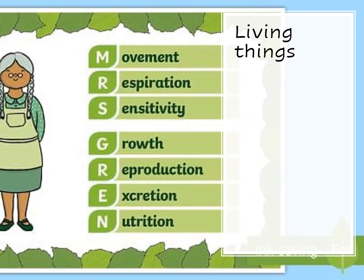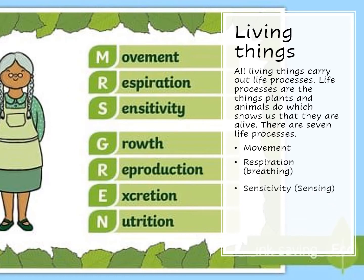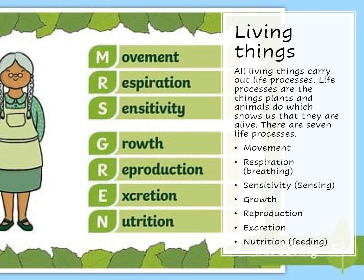All living things carry out life processes. Life processes are the things plants and animals do, which show us that they are alive. There are seven life processes: movement, respiration or breathing, sensitivity, growth, reproduction, excretion, and nutrition or feeding.